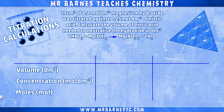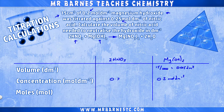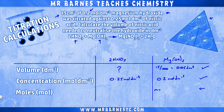Let's go through one final example with a slightly different take. I've got 15 centimetres cubed of 0.2 moles per decimetre cubed magnesium hydroxide — so 0.015 decimetres cubed for the volume and 0.2 moles per decimetre cubed for the concentration. I also have 0.25 moles per decimetre cubed of nitric acid. The question here is asking for the volume of nitric acid, which is slightly different. I have the volume and concentration of magnesium hydroxide, so moles is 0.2 times 0.015, giving 0.003 moles of magnesium hydroxide.